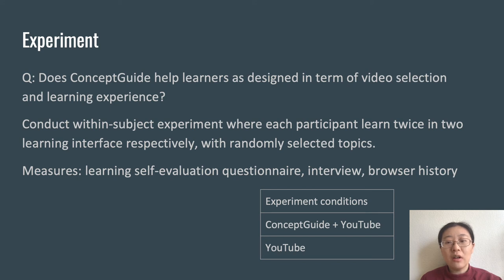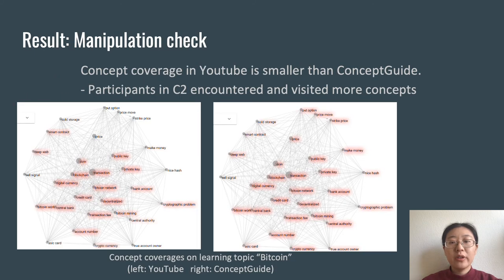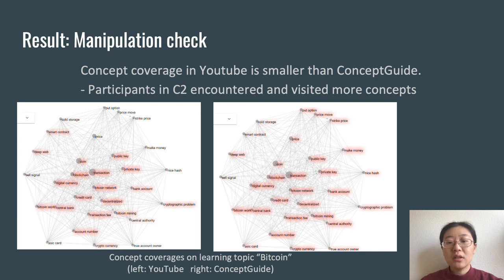We asked participants about their learning experience including learning focus, motivation, and quality of videos watched in each session, and collected their browser histories. We also conducted follow-up interviews at the end of the experiment. For the manipulation check, we validated concept maps with words visited and materials consumed by learners in both conditions to understand the breadth and relevance of concepts recommended. The concept coverage of YouTube was smaller than that of Concept Guide regardless of topic, and the total number of concept visits was 30% higher with Concept Guide compared to the YouTube interface.